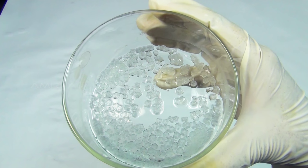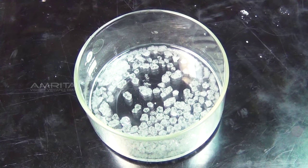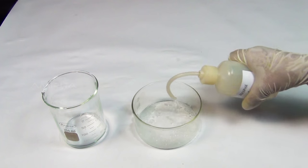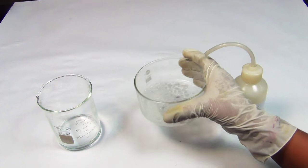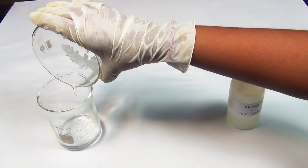On cooling, colourless crystals of potash alum separate out. Wash the crystals two or three times with a little alcohol containing a small amount of cold water.